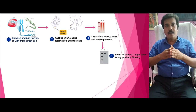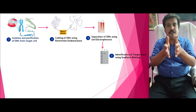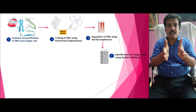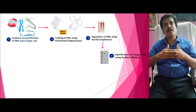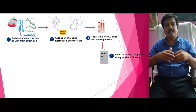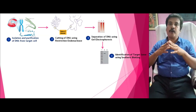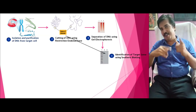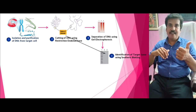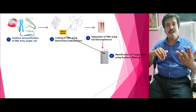Southern blotting is a hybridization technique — like a child playing with two blocks, one protruding and one complementary, fitting precisely into each other. The double-stranded DNA obtained from gel electrophoresis is denatured into two single-stranded forms, and one strand is transferred to a nitrocellulose or nylon paper. A probe DNA complementary to the gene of interest is used; the complementary pair gets annealed and is identified by autoradiography. Southern blotting helps in the identification of the gene of interest.